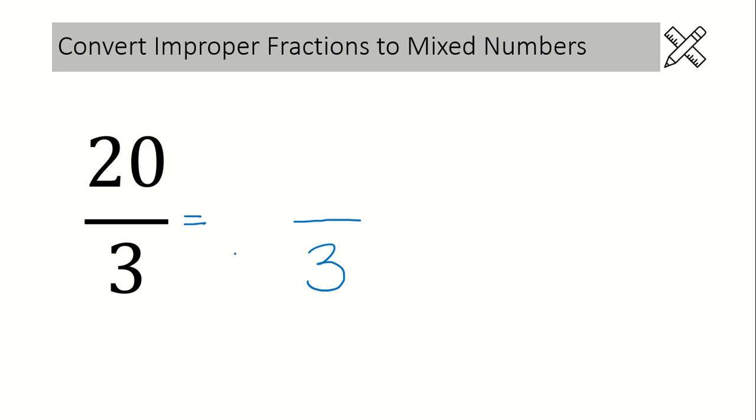Next we need to figure out what this whole number is going to be. Here's how you do that. You come over here to your improper fraction and you look at your denominator, in this case it's a 3, and then you ask yourself at most how many times can this number 3 go into 20? The answer is 6. 6 is going to be your whole number.